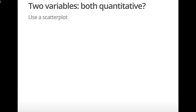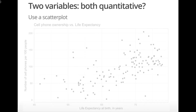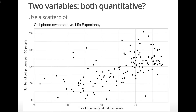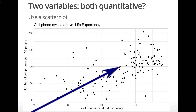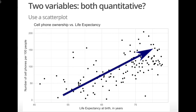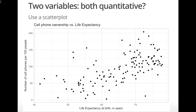What if we wanted to show how number of cell phones per 100 people and average life expectancy are related? Here we have two variables and both are quantitative, so we can use a scatter plot. From this scatter plot, we see a generally positive linear relationship — that is, as average life expectancy increases, so does the number of cell phones per 100 people. This is probably not too surprising, but just be careful not to conclude causation here.